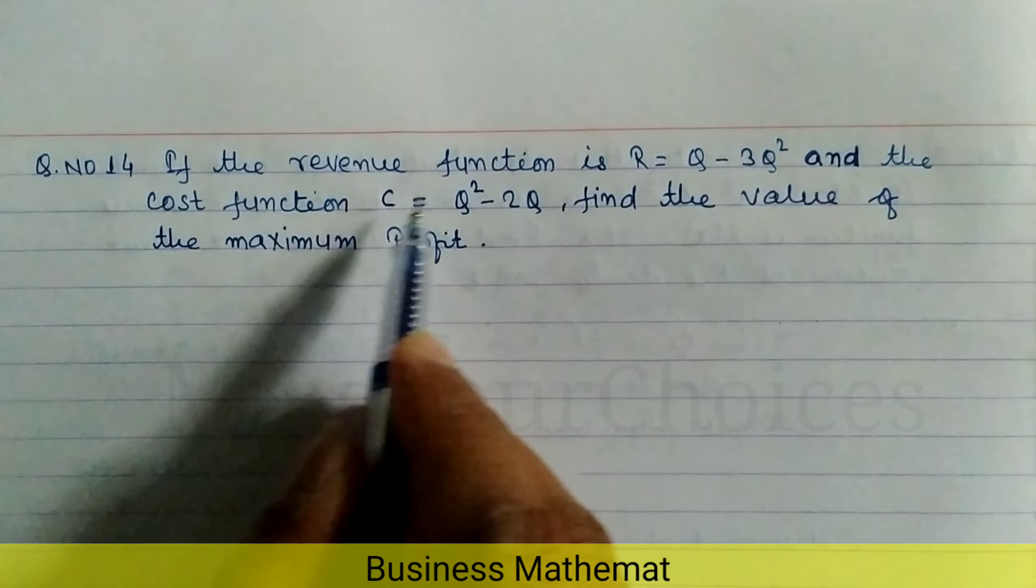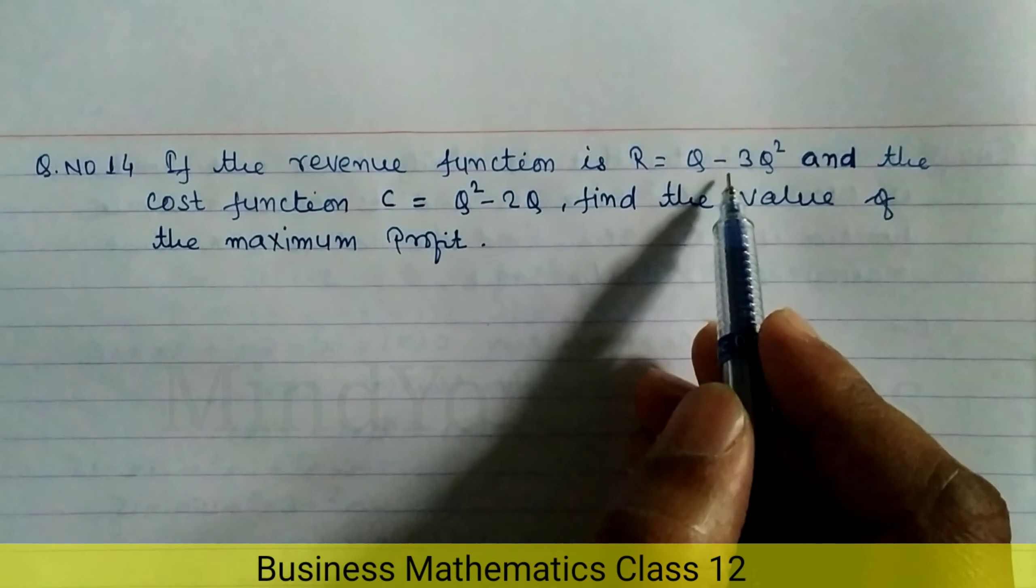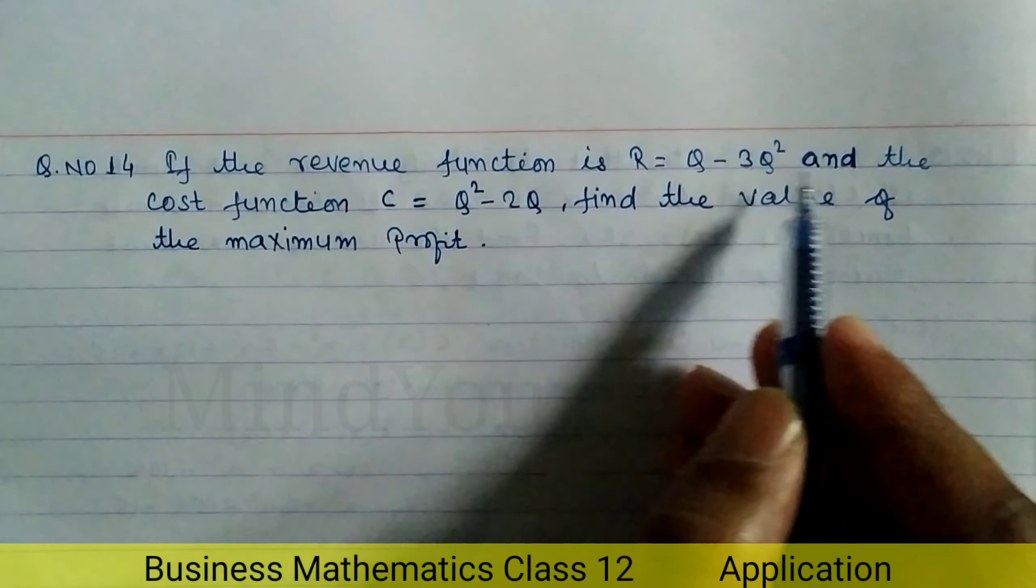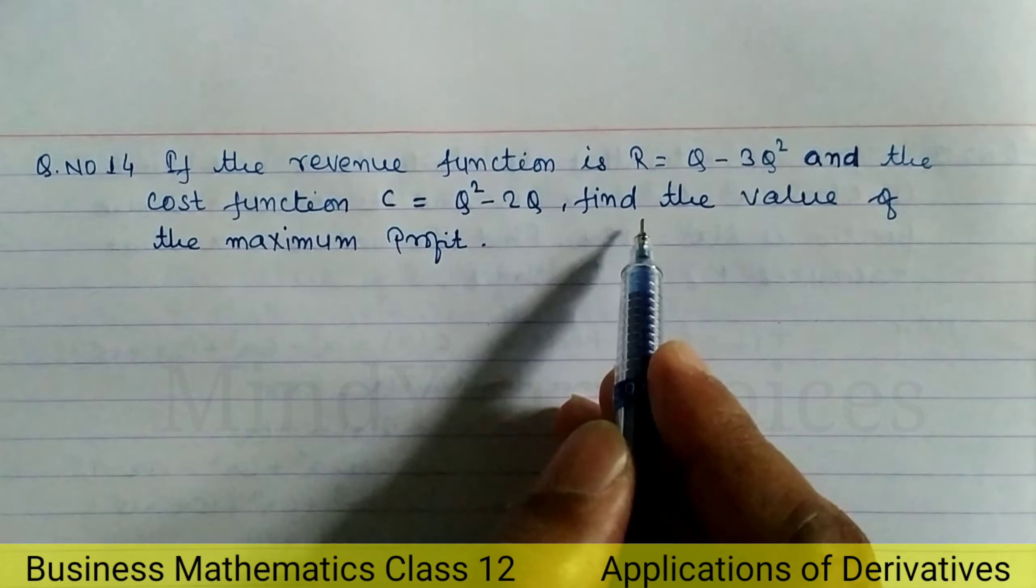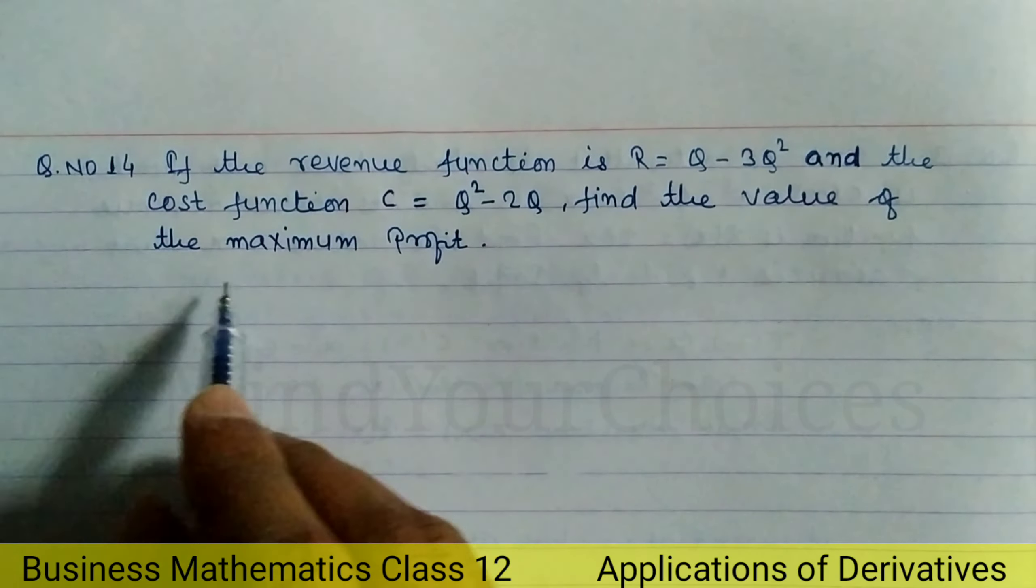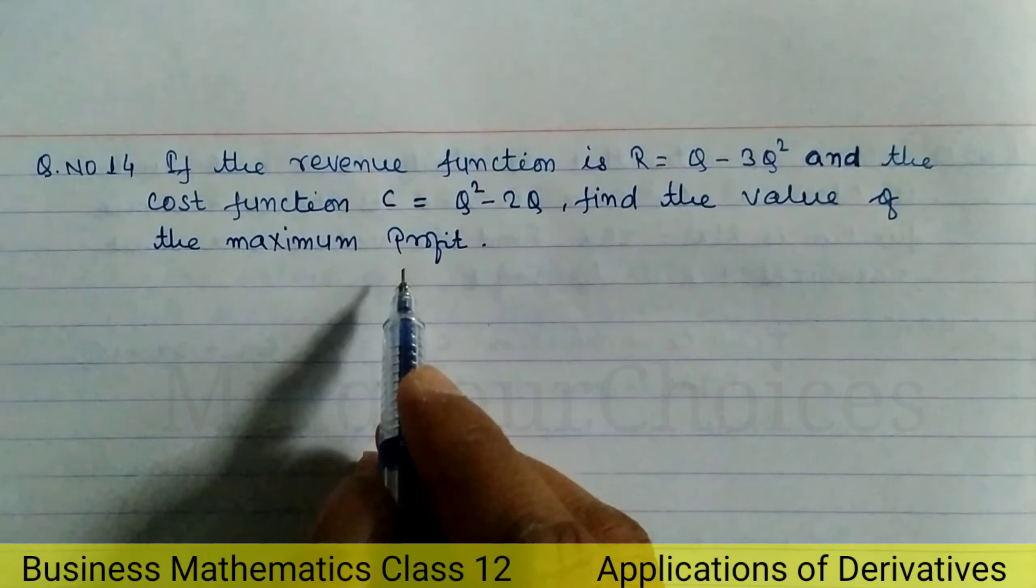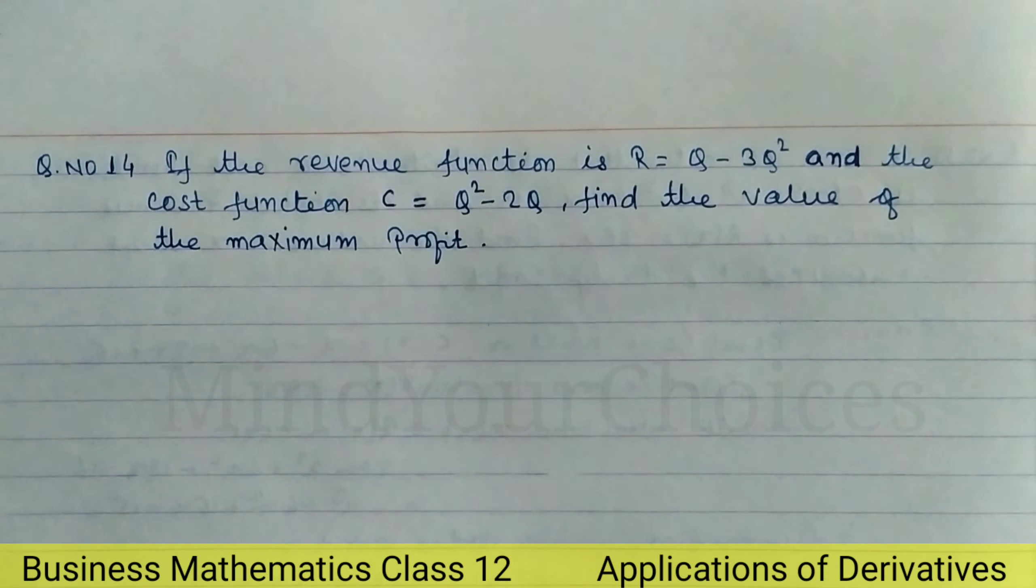Question number 14: If the revenue function is R equals Q minus 3Q square and the cost function is C equals Q square minus 2Q, find the value of the maximum profit. Let's take a start.